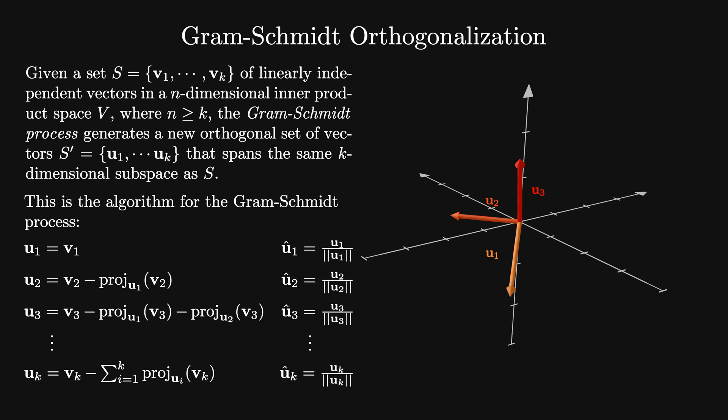Then, we divide each of the vectors in our orthogonal basis by its magnitude to get an orthonormal basis for our vector space.